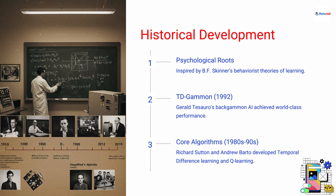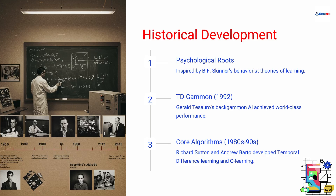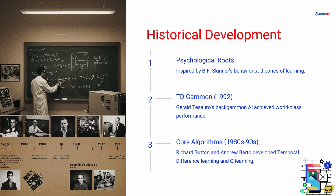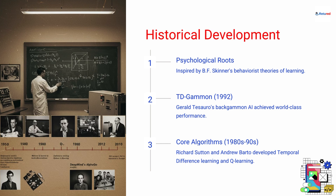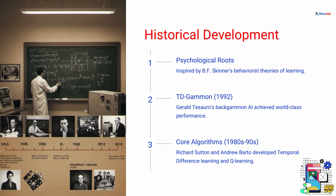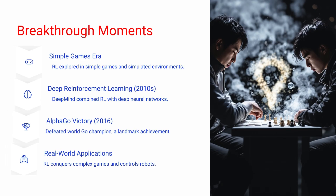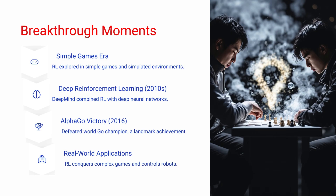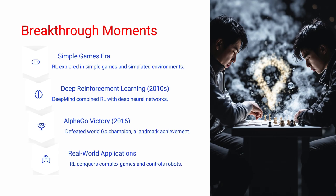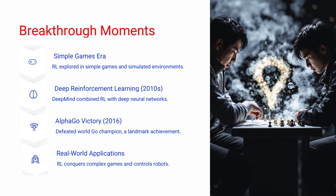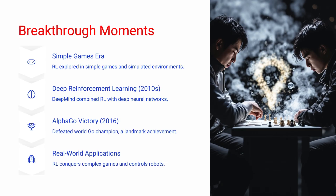Reinforcement learning has fascinating historical roots in both computer science and psychology. Inspired by B.F. Skinner's experiments on behaviorism, early AI successes like Gerald Tesauro's TD-Gammon in the 1990s paved the way for modern RL. Pioneers such as Richard Sutton and Andrew Barto formalized many of these foundational concepts. For years, RL was mainly explored in simple games and simulated environments. Then a breakthrough came in the 2010s with deep reinforcement learning — AI systems mastered Atari games and even defeated a world champion in Go with AlphaGo, an achievement that once seemed decades away.